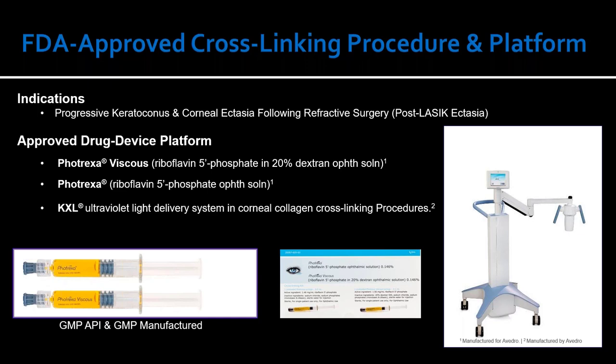The approved cross-linking procedure is iLink. The indication is progressive keratoconus or progressive corneal ectasia following refractive surgery. The three-component platform includes: the KXL ultraviolet light delivery unit, Photrexa Viscous (the main riboflavin solution), and Photrexa (the hypertonic solution). We'll discuss how these different riboflavin solutions are used for different patients.